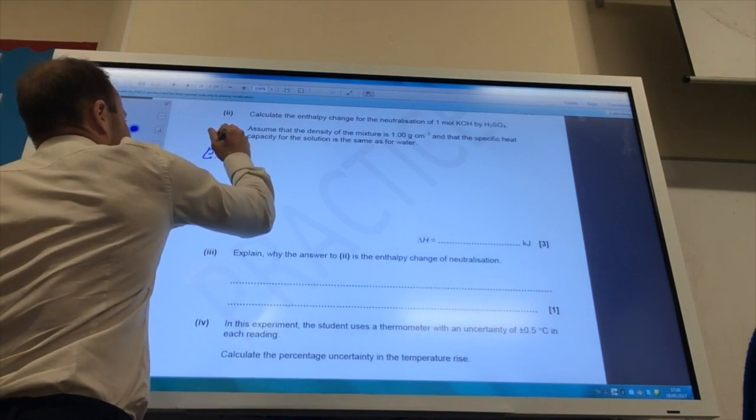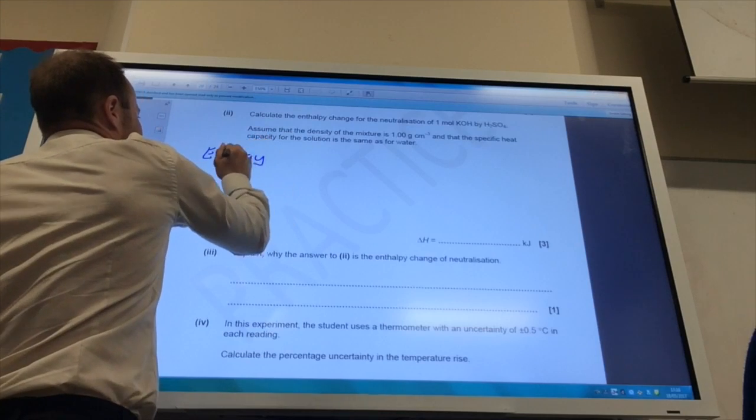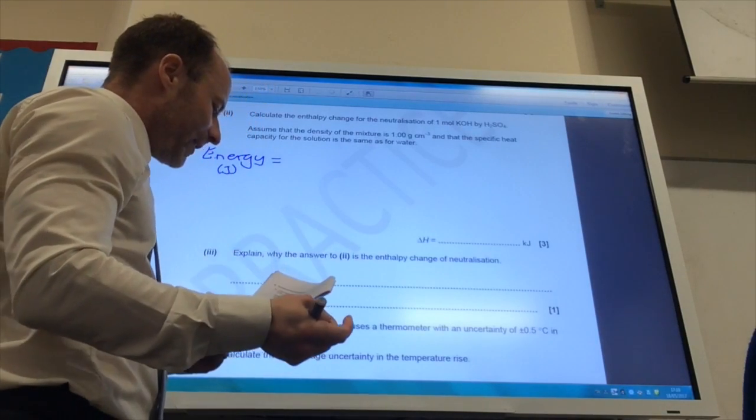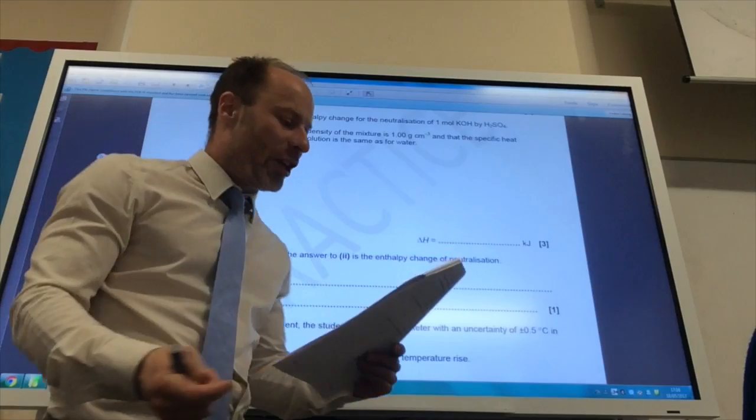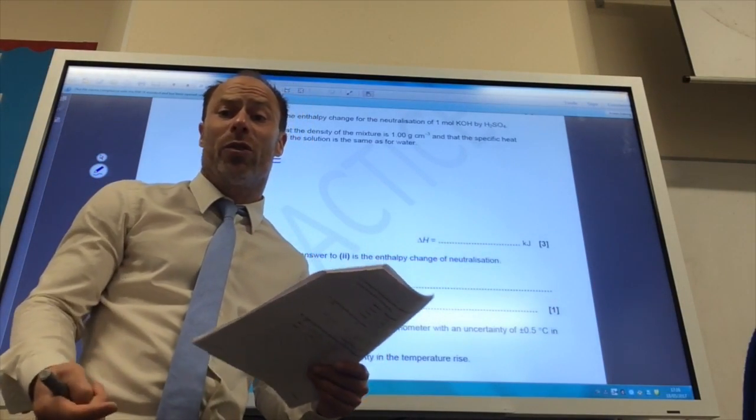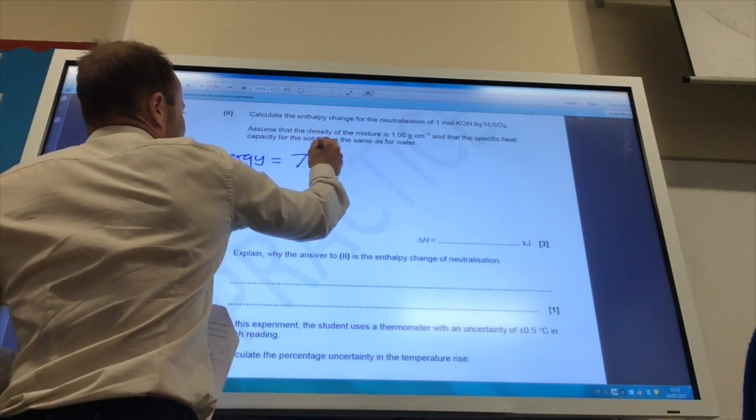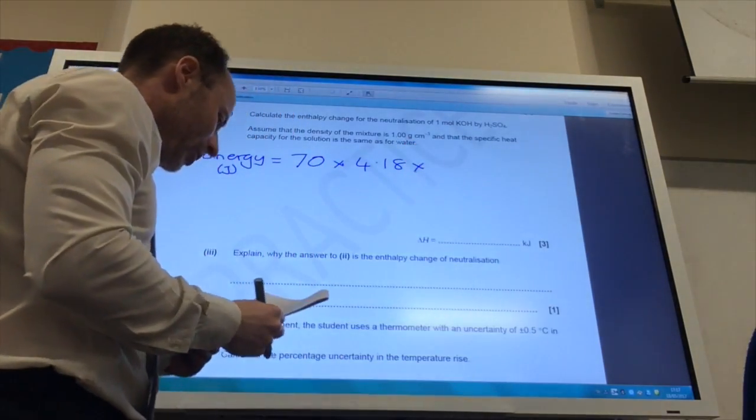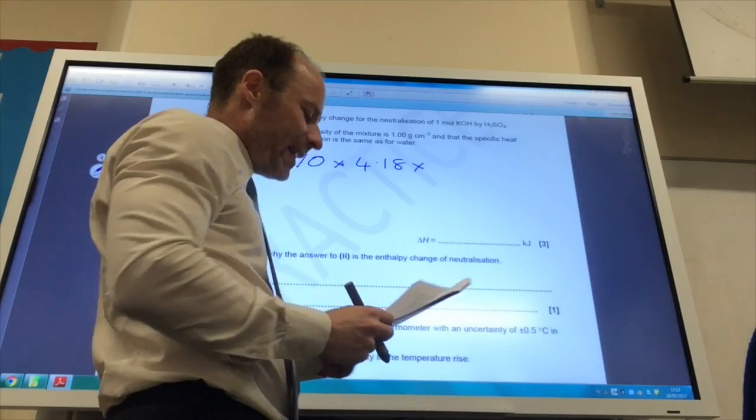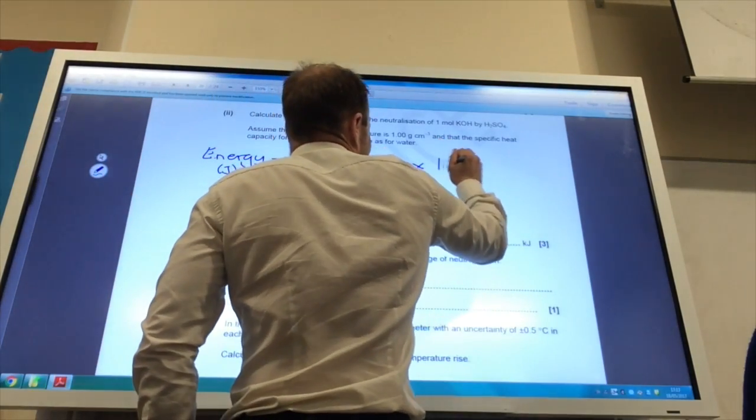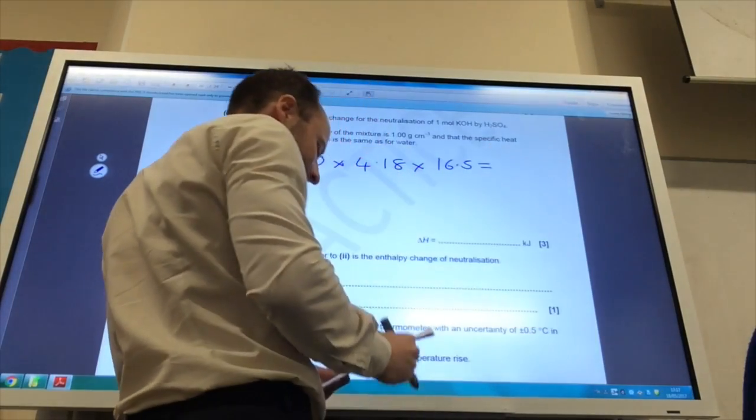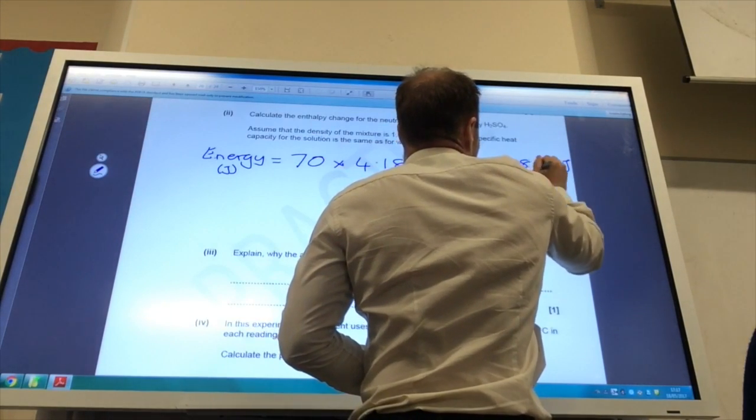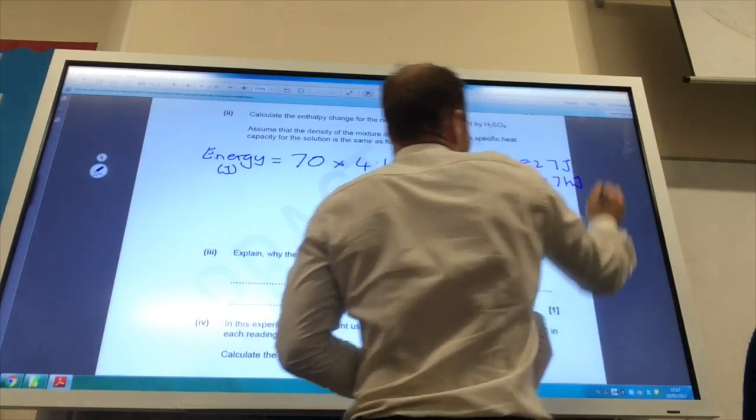It now wants me to calculate the enthalpy change for that reaction. So the first thing I'm going to work out is the energy produced, and of course the energy produced is in joules. You've got 35 cm³ of potassium hydroxide and 35 cm³ of sulfuric acid, so in total you have got 70 cm³. So I've got 70 for water, the specific heat capacity of water is 4.18, and my temperature change, it's gone from 19.5 to 36, so my temperature change is 16.5 degrees. And if you pop that in your calculator, you will get 4,827 joules or 4.827 kilojoules.